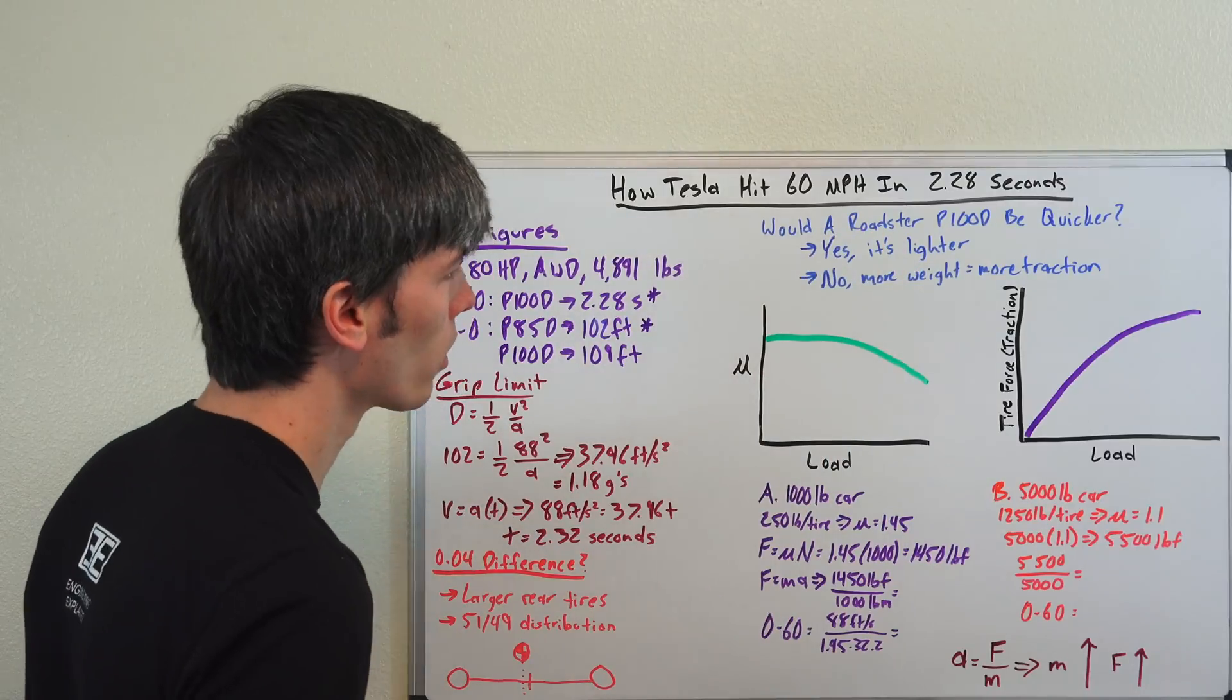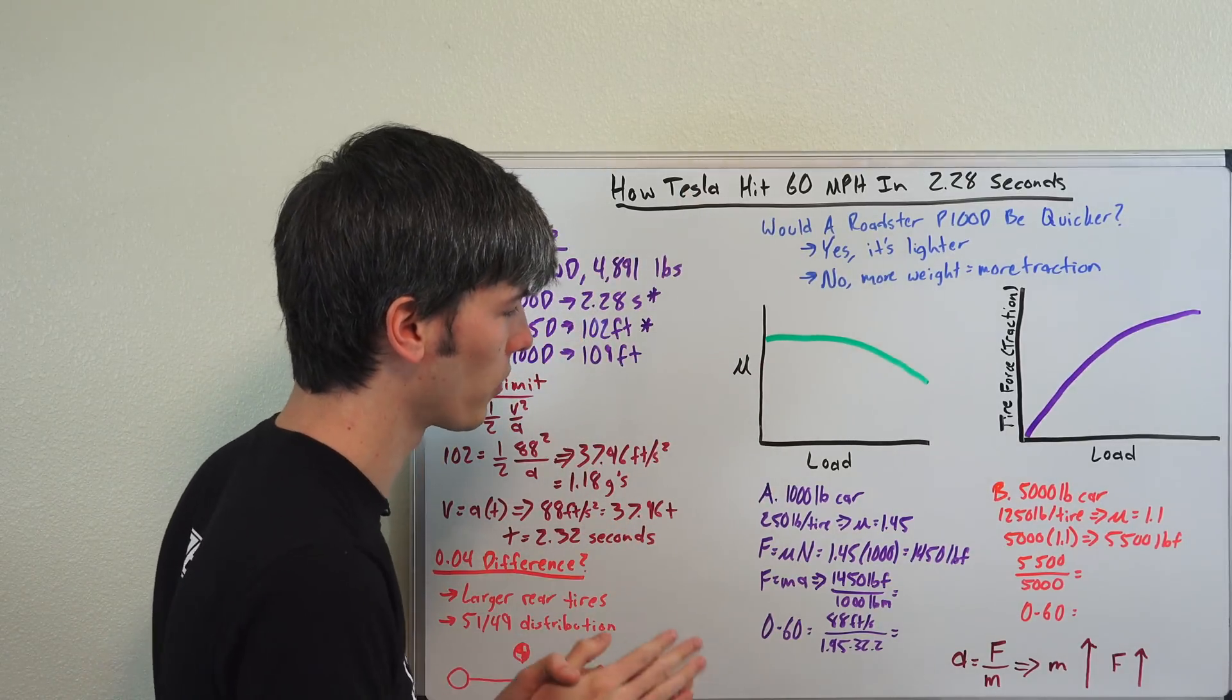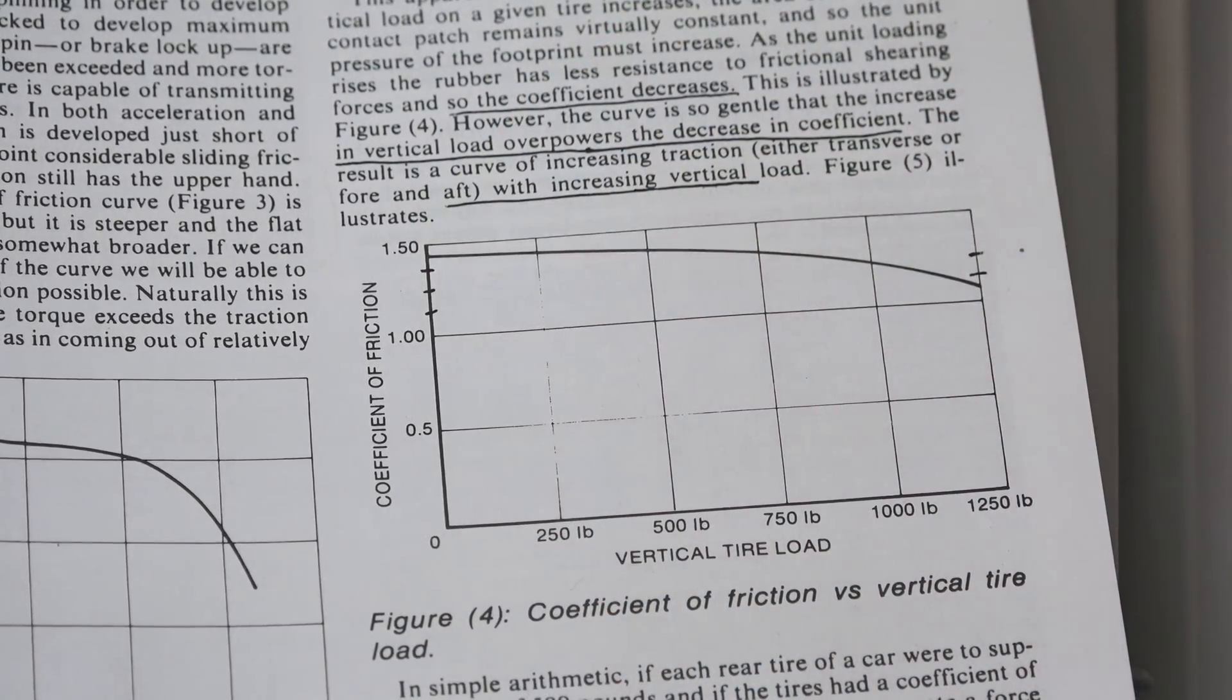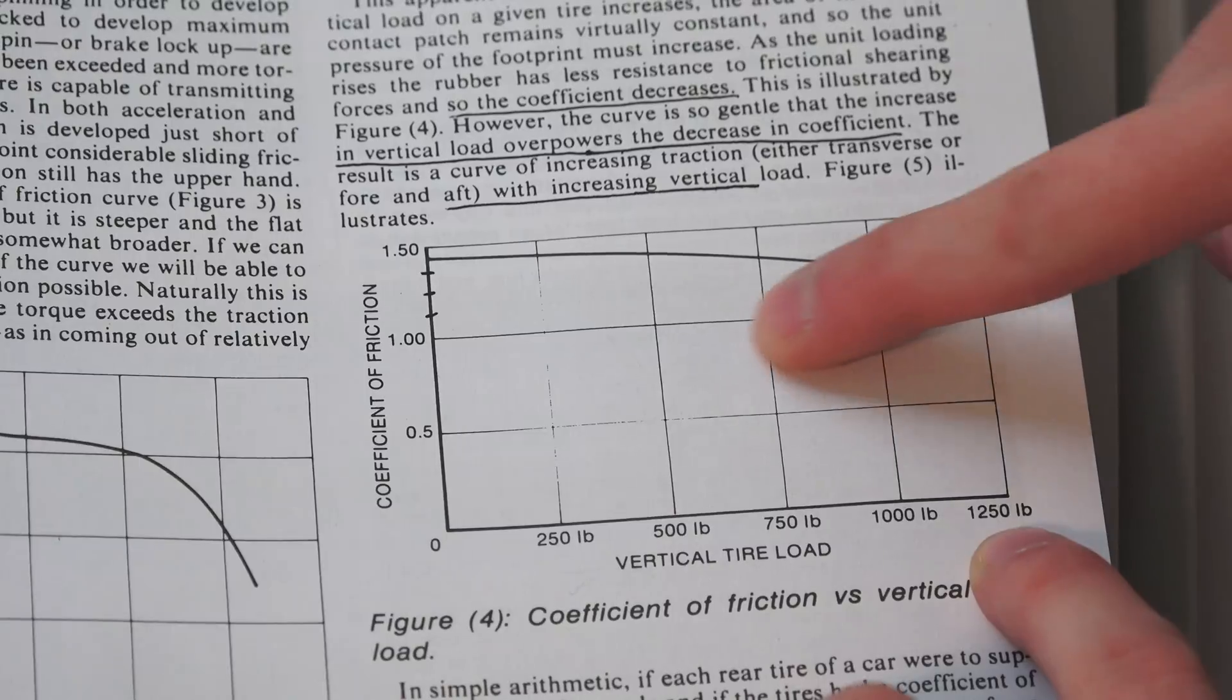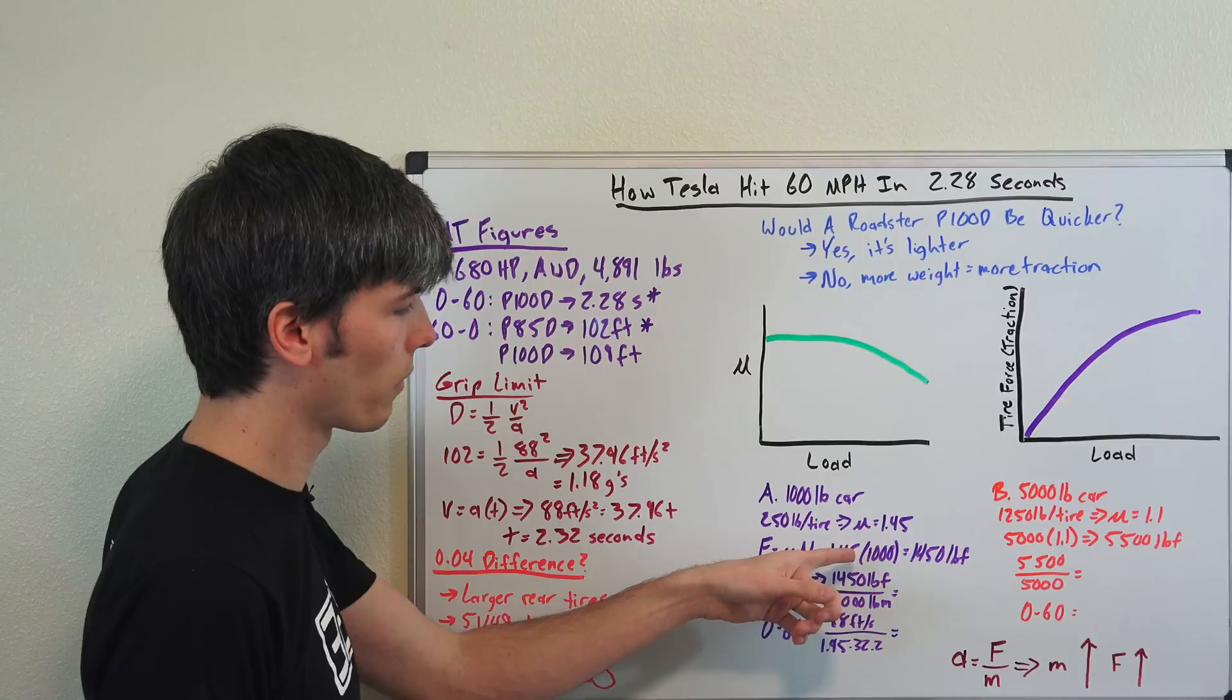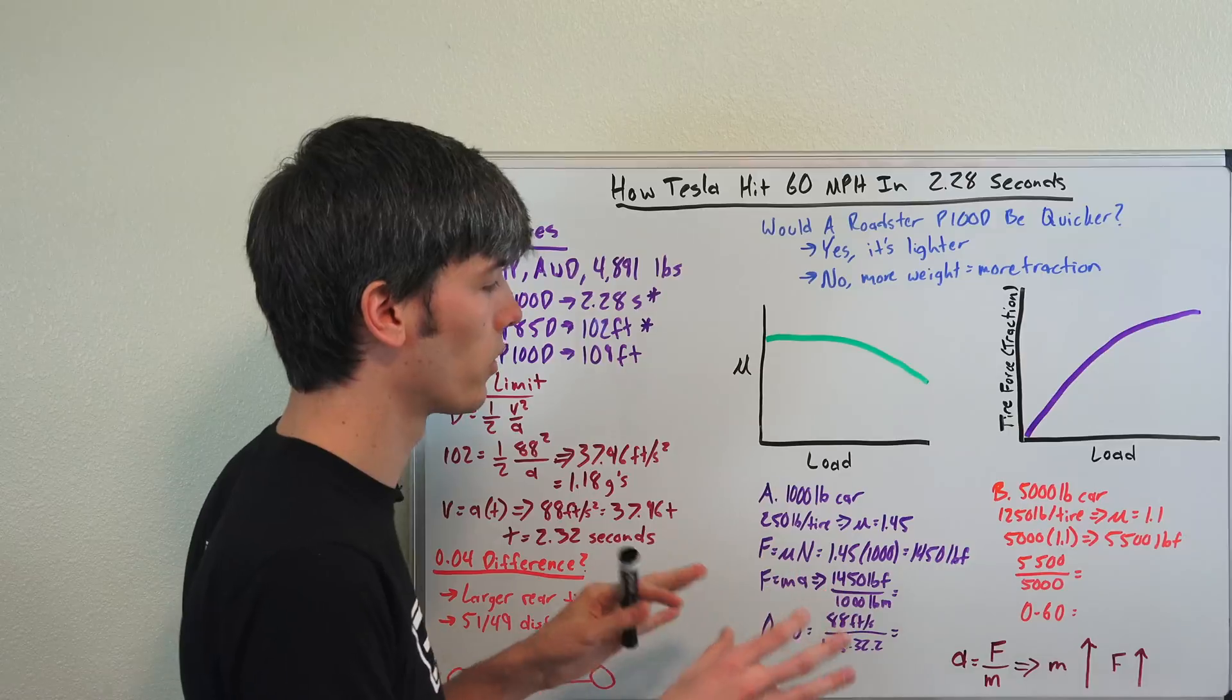So applying that to our question here, would a roadster be quicker? Well, there's some very simple math which we can do in order to prove which if it's yes or no to that question. So looking at his exact chart and just pulling some data points from it, if we look at a thousand pound car, we can read that it has a coefficient of friction with just 250 pounds per tire of 1.45. If we look at a 5,000 pound car we can see that it has 1,250 pounds per tire for a coefficient of friction of 1.1. Now if we look at the equation for the maximum force that the tire can apply to the ground, that's going to be equal to the coefficient of friction multiplied by the normal force. In this case 1.45 times 1,000, this will give us 1,450 pounds force. That's the maximum force, assuming the car has enough horsepower for it, that it can apply to the ground without the tire spinning.